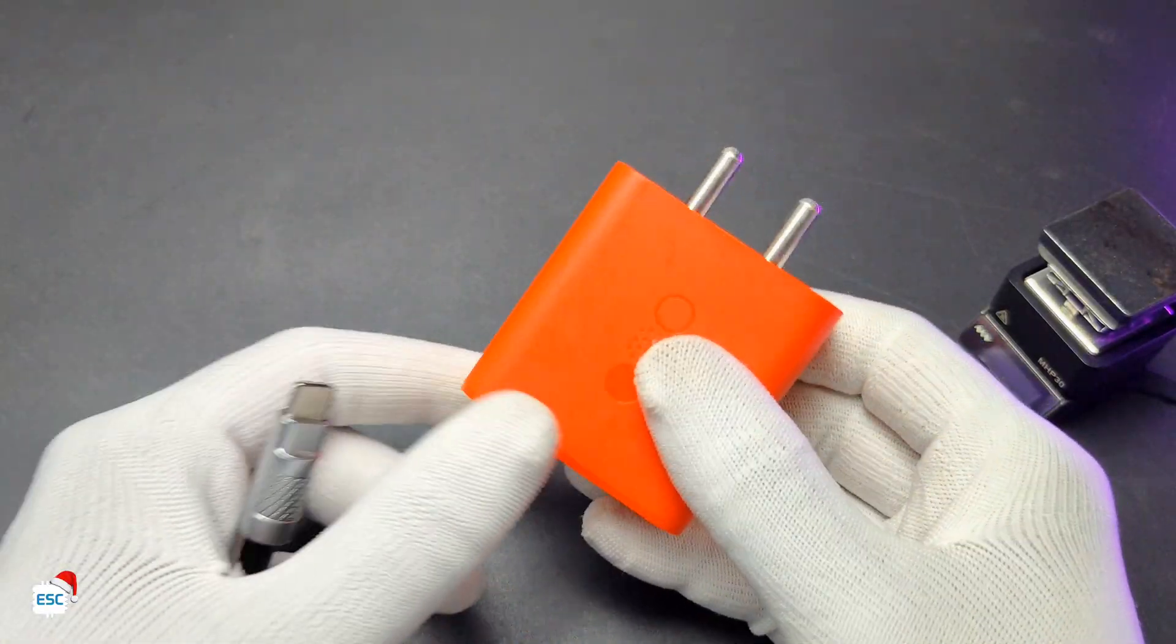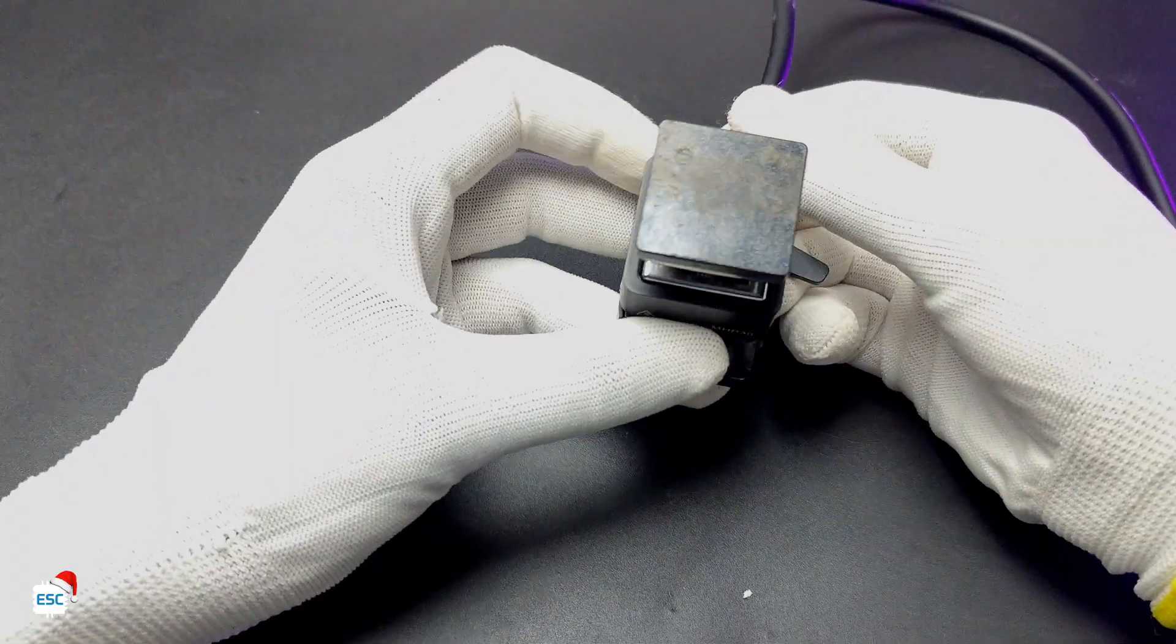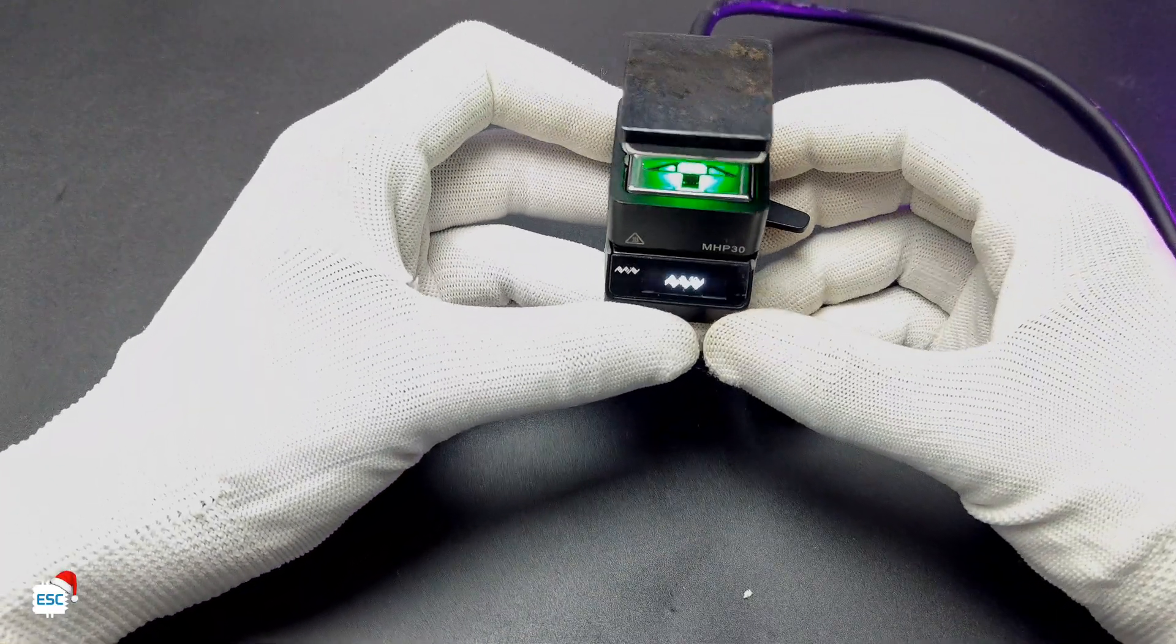Now let's give power to MHP30. We need to use a proper 65W PD adapter for this. After giving power you can see the MiniWire logo.